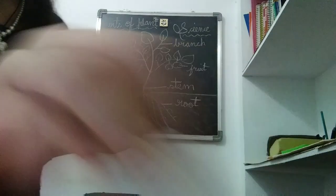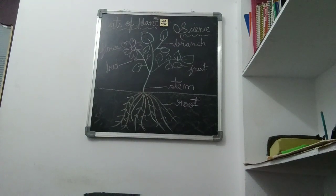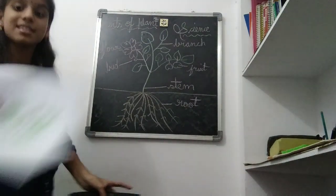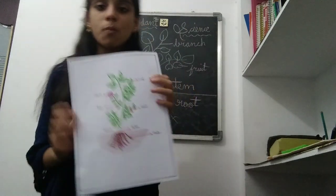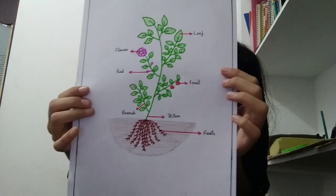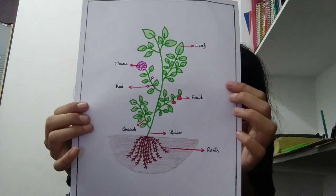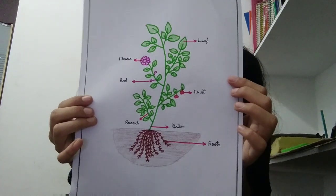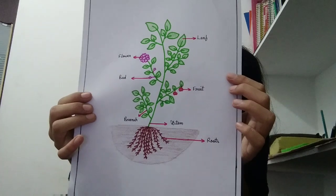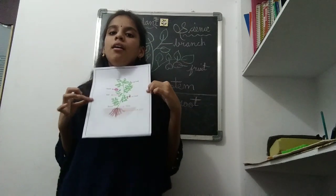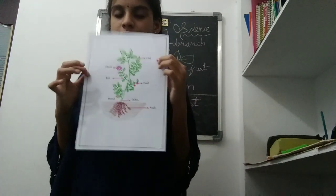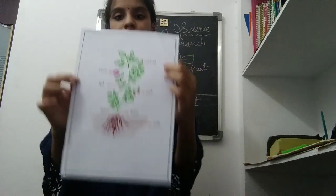So these are all the parts. And the best part of the video is this drawing — I love this drawing, I like it so much, see how nice it is. Leaf, flower, fruit, branch, bud, stem and root. These are the parts of plant.